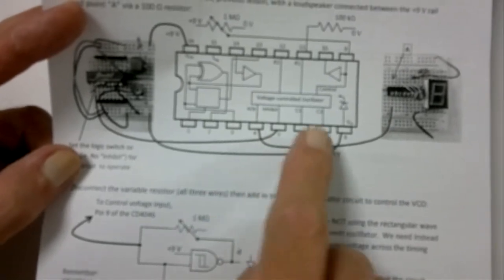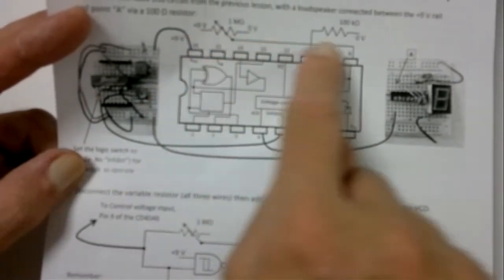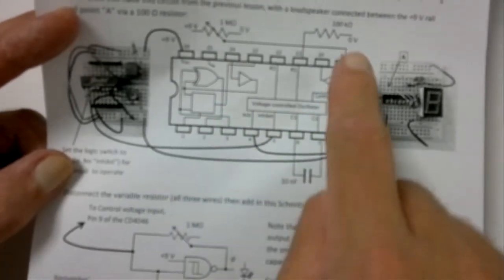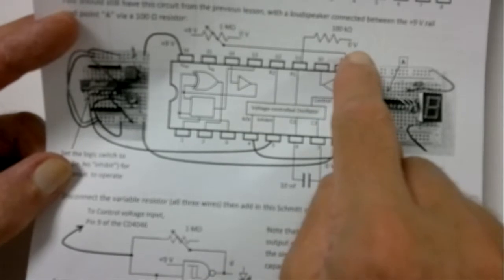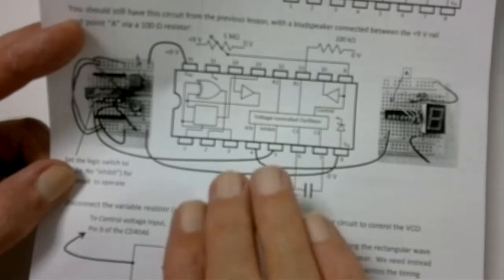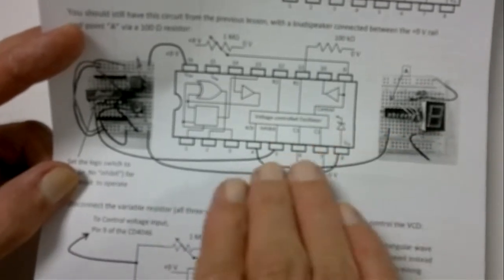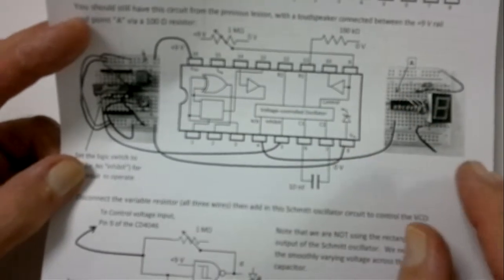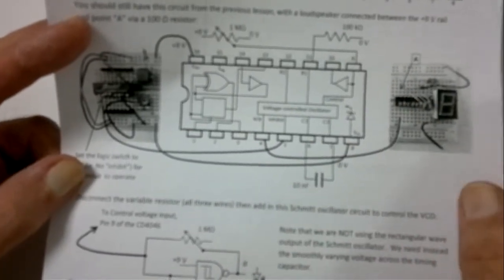What we did last week was we just put a DC voltage into the control voltage. And then the very last thing we did was put a capacitor across that input, from pin nine down to ground. And we found there was a real delayed reaction. When we changed the voltage, it took a while to follow as the capacitor was charging and discharging. Well, we can use that.